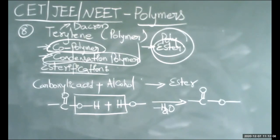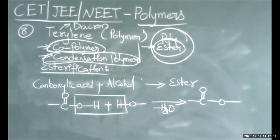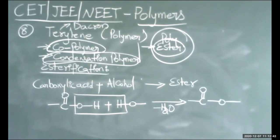Checking the options for question 8: Statement A — it is a polyester. Statement B — it is obtained by reaction between ethylene glycol and terephthalic acid. Statement C — it is a condensation polymer. Statement D — it is a natural polymer. Statement D is incorrect; terylene is a synthetic polymer, not a natural polymer.